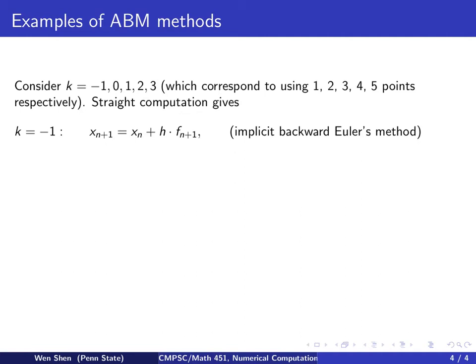the simplest case is when k equals negative 1. That means we only use the value f at n plus 1, and the polynomial will be a constant, a polynomial of degree 0. We end up with this numerical scheme. This is a first-order scheme, and we recognize it as the implicit backward Euler's method.